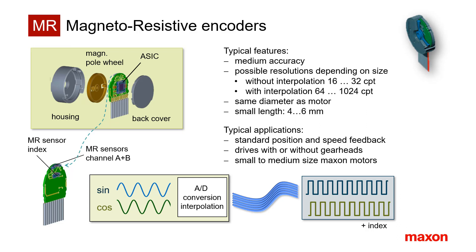The MR encoder exhibits a small size. Generally, its housing has the same diameter as the motor, and the motor length is increased by just a few millimeters. It can be found on older Maxon motor families.